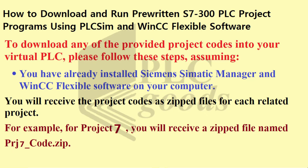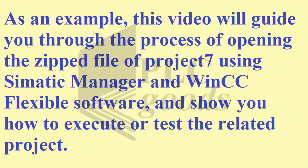You will receive the project codes as zipped files for each related project. As an example, for project number 7, you will receive a zipped file named prj7code.zip. This video will guide you through the process of opening the zipped file of project 7 using Simatic Manager and WinCC Flexible software and show you how to execute or test the related project.